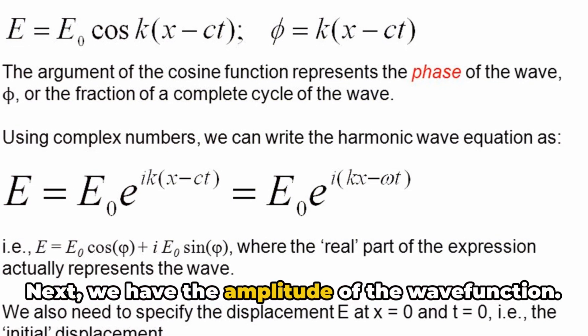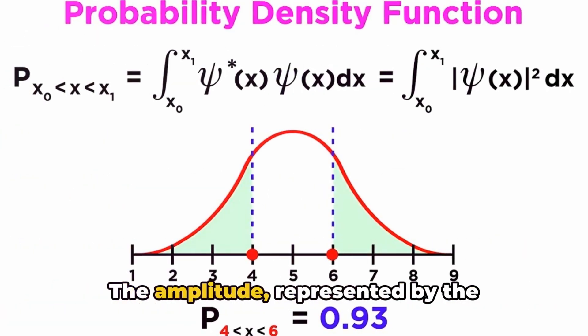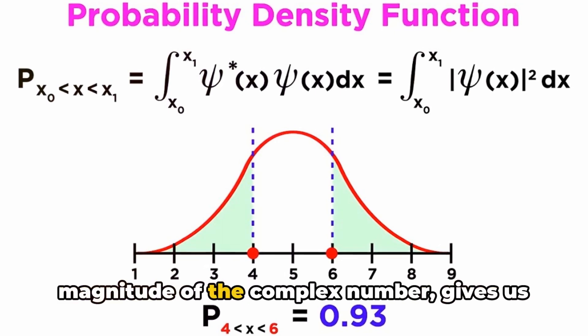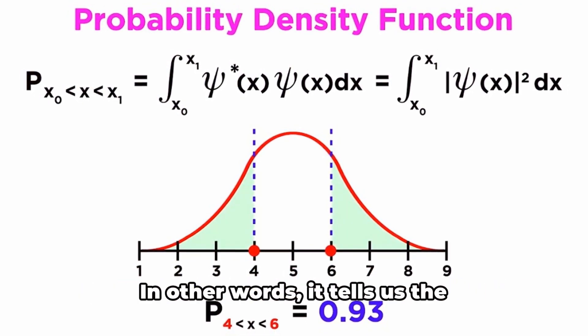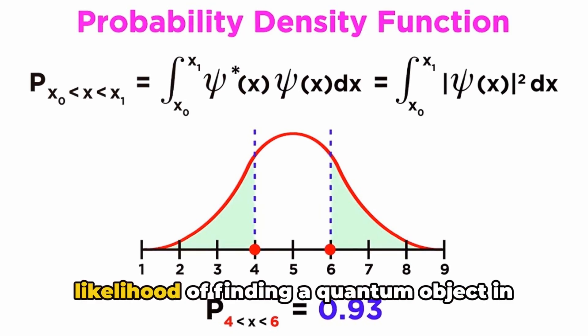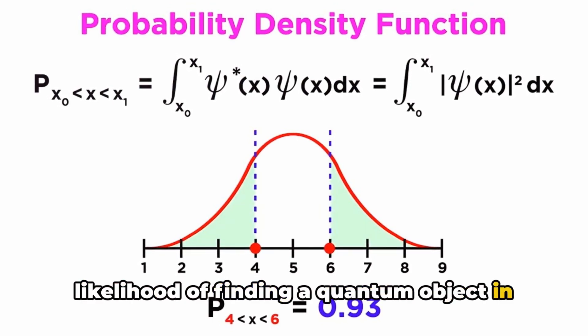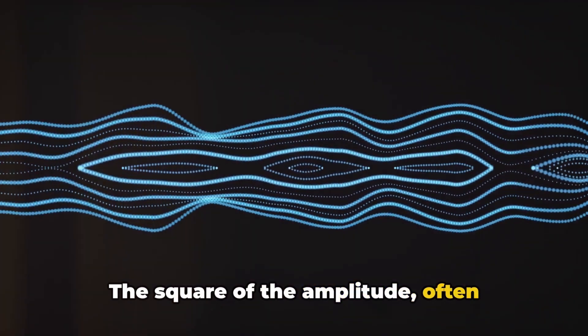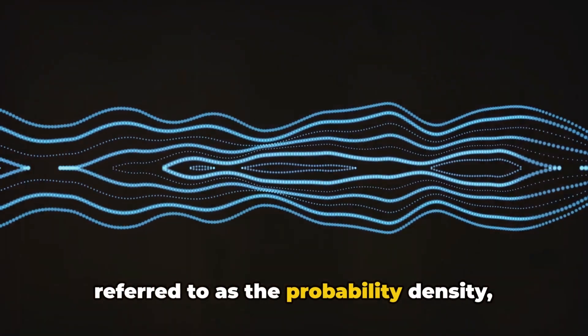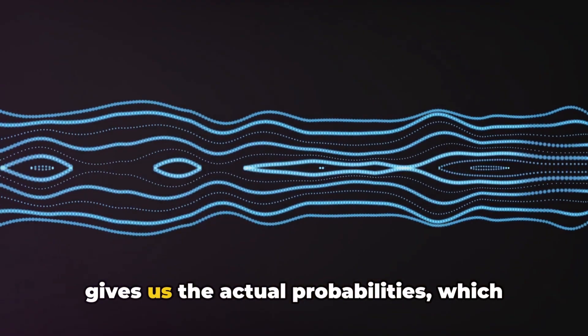Next, we have the amplitude of the wave function. The amplitude, represented by the magnitude of the complex number, gives us the probability density of the system. In other words, it tells us the likelihood of finding a quantum object in a certain state or position. The square of the amplitude, often referred to as the probability density, gives us the actual probabilities, which always sum to one.